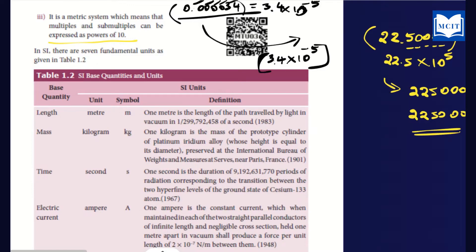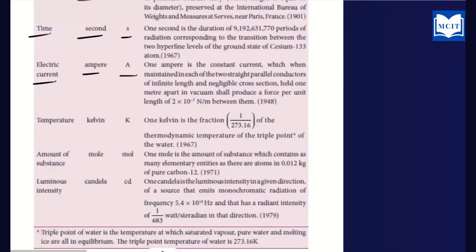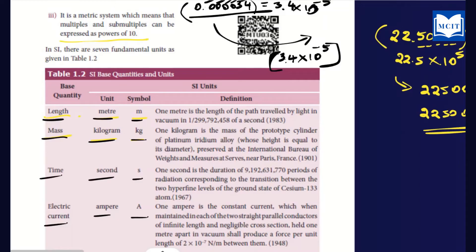The 7 fundamental SI units in a table: Length — SI unit is meter (m). Mass — SI unit is kilogram (kg). Time — SI unit is second (s). Electric current — SI unit is ampere (A). Temperature — SI unit is kelvin (K). Amount of substance — SI unit is mole (mol). Luminous intensity — SI unit is candela (cd). These are the seven fundamental units in the SI system.